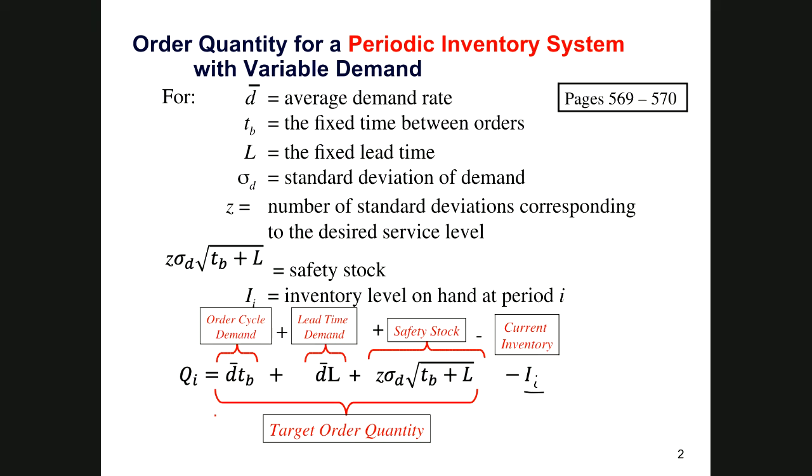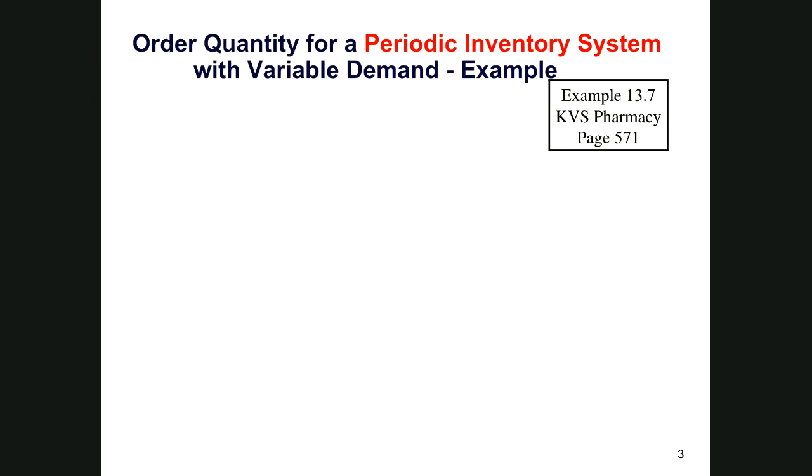So let's look again at another example out of the textbook. And this is example 13.7 on page 571, and it's the KVS pharmacy problem. The KVS pharmacy stocks a particular brand of over-the-counter flu and cold medicine. The average demand for the medicine is six packages per day with a standard deviation of 1.2 packages. The vendor for the pharmaceutical company checks the KVS every 60 days. During one of the visits, the store had eight packages in stock. The lead time to receive the order is five days, and the management wishes to maintain a 95% service level.